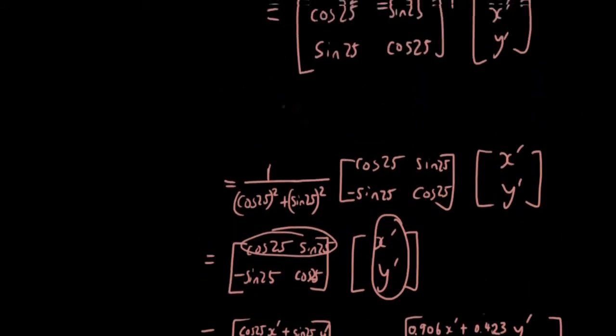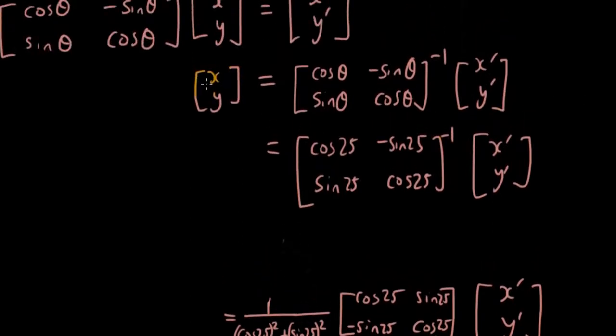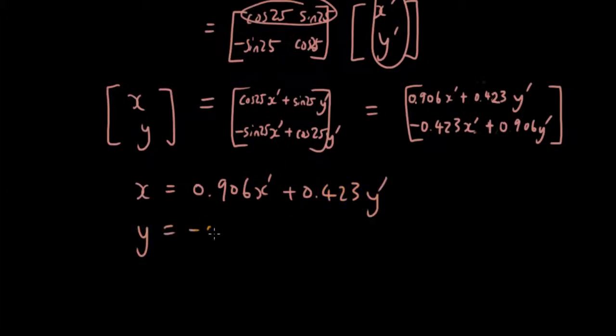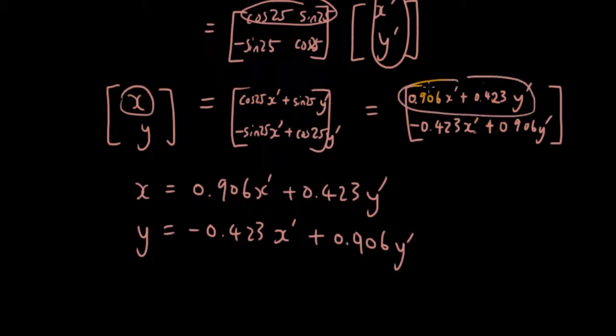If you guys remember, originally we had on the left hand side x and y inside the matrix. So x and y matrix is equal to this matrix, so therefore x is equal to 0.906x' plus 0.423y', and y is equal to negative 0.423x' plus 0.906y', according to this matrix equation. The first element must equal the first element, the second element must equal the second element, and so on.